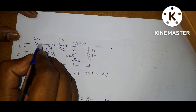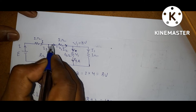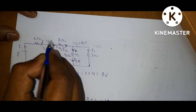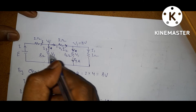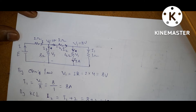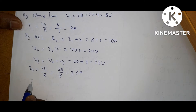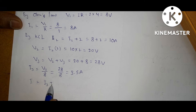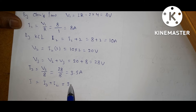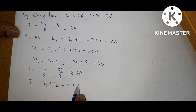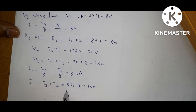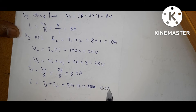Now, this is current I. Apply KCL here — we got V3 is 28 volts. Applying KCL at V3: the incoming current is I and the leaving currents are I3 and I2. So I is equal to I3 plus I2. I3 is 3.5 amps and I2 is 10 amps, so you will get I equal to 13.5 amps.